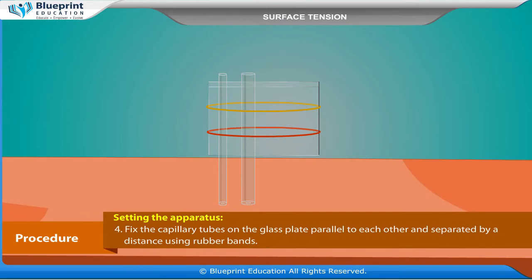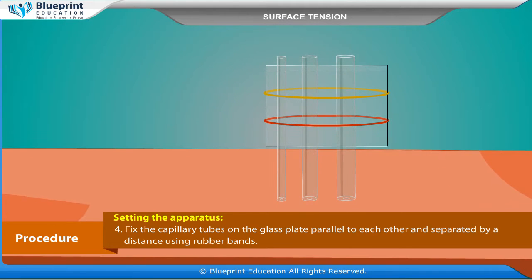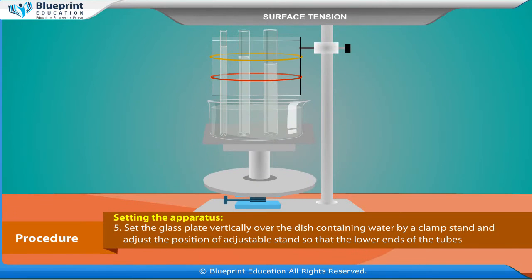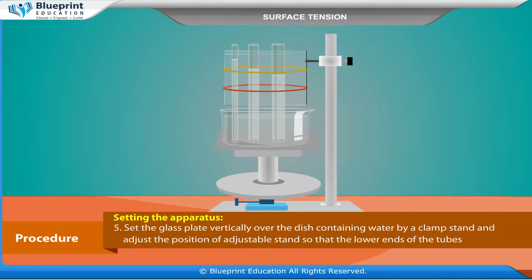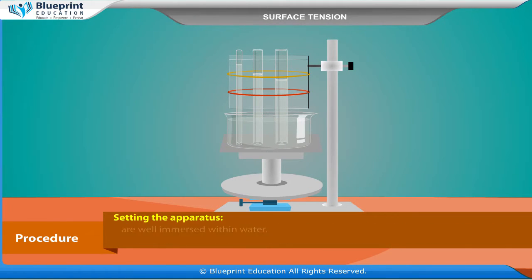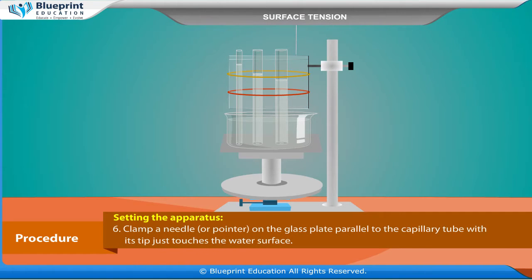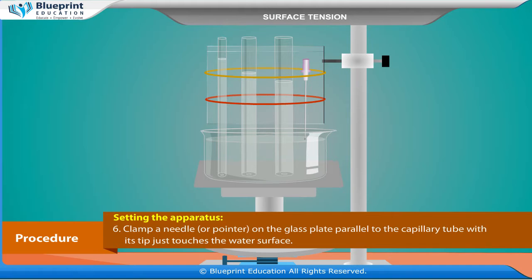Fix the capillary tubes on the glass plate parallel to each other and separate them by a distance using rubber bands. Set the glass plate vertically over the dish containing water by a clamp stand and adjust the position of the adjustable stand so that the lower ends of the tubes are well immersed within water. Clamp a needle on the glass plate parallel to the capillary tube with its tip just touching the water surface.